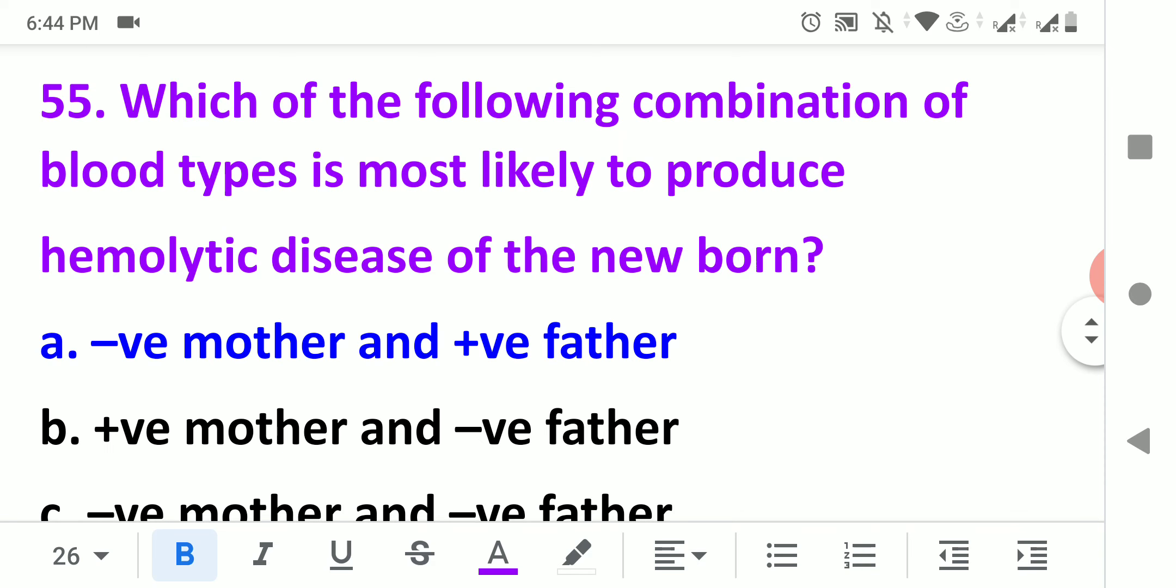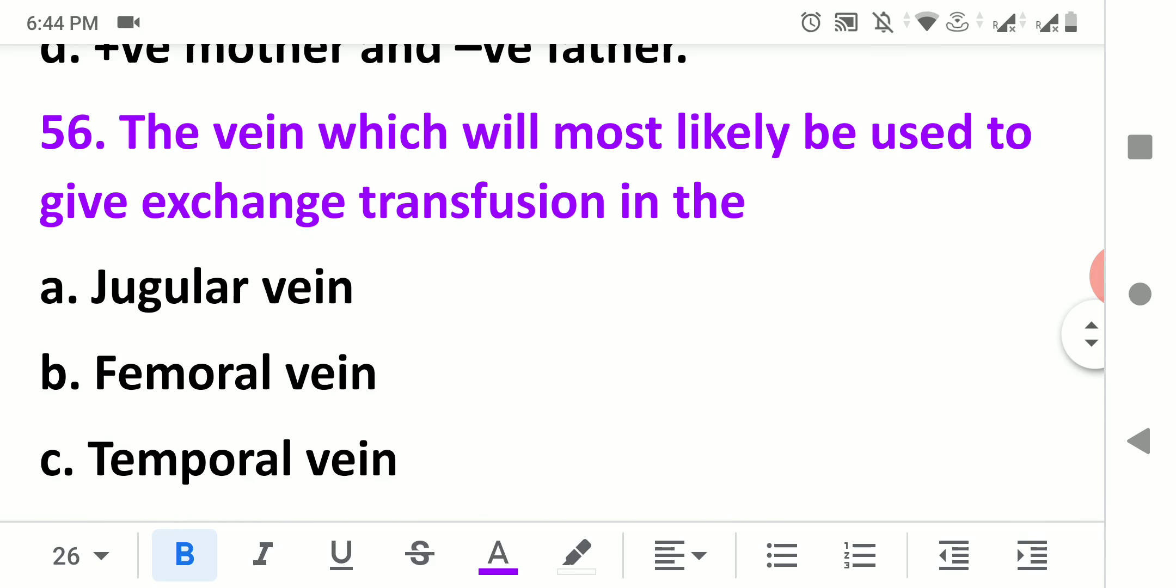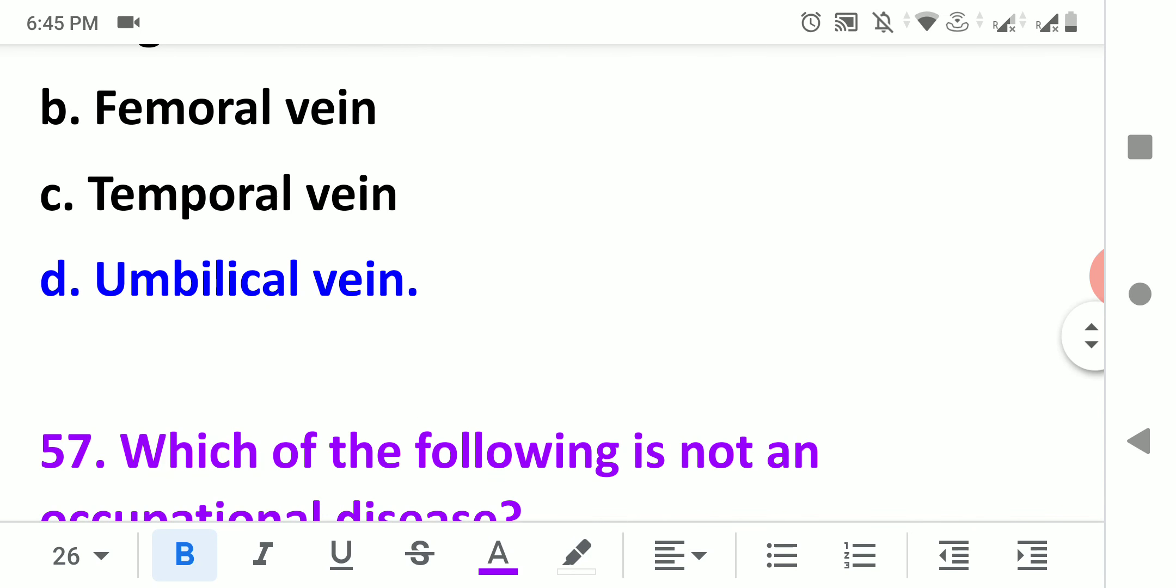Which of the following combination of blood type is most likely to produce hemolytic disease of the newborn? The hemolytic disease in the newborn occurs only if mother is Rh negative and father is Rh positive. The vein which will most likely be used to give exchange transfusion in the newborn is the umbilical vein.